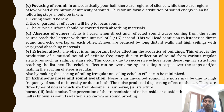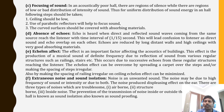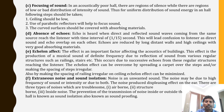Echelon effect is the production of musical sound of a definite frequency due to reflection of sound from various structures such as railings and stairs. This occurs due to the succession of echoes from these regular structures reaching the listener. The echelon effect can be overcome by spreading carpet over the steps. Our shoes make noise when entering the hall; sound is also created by railings, stairs, and other structures. To avoid this, carpet should be used. Also, making the spacing in the railing irregular can minimize the echelon effect.